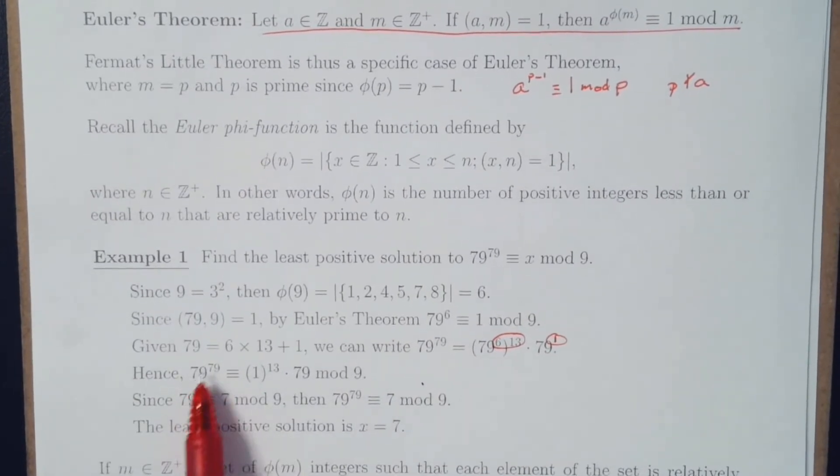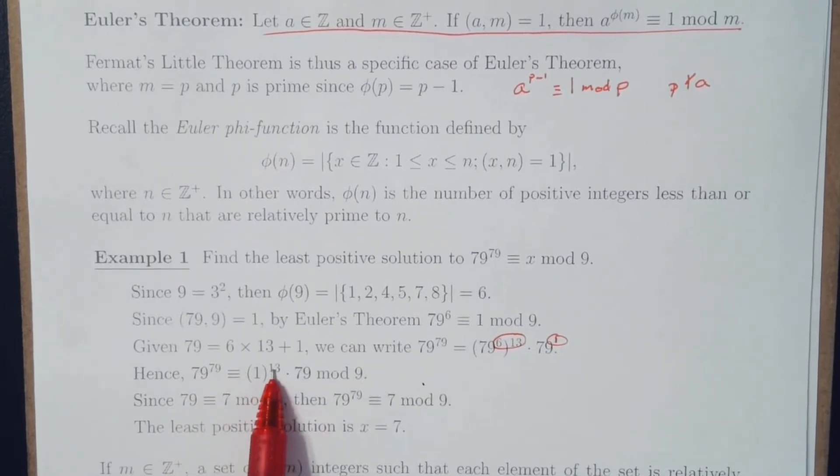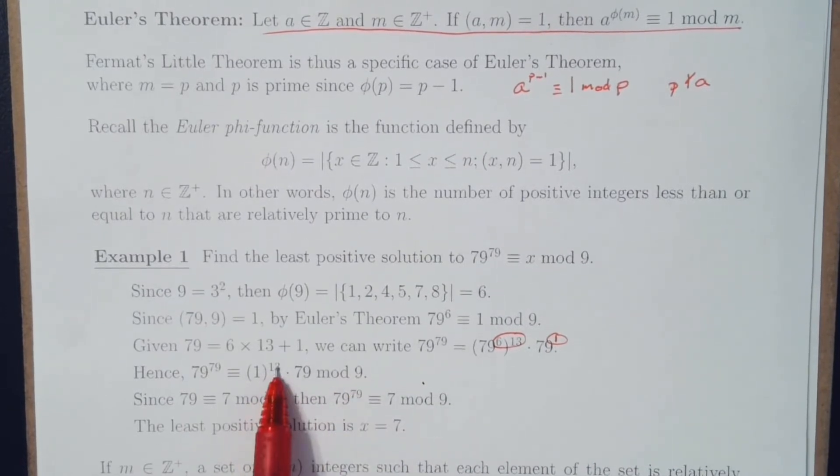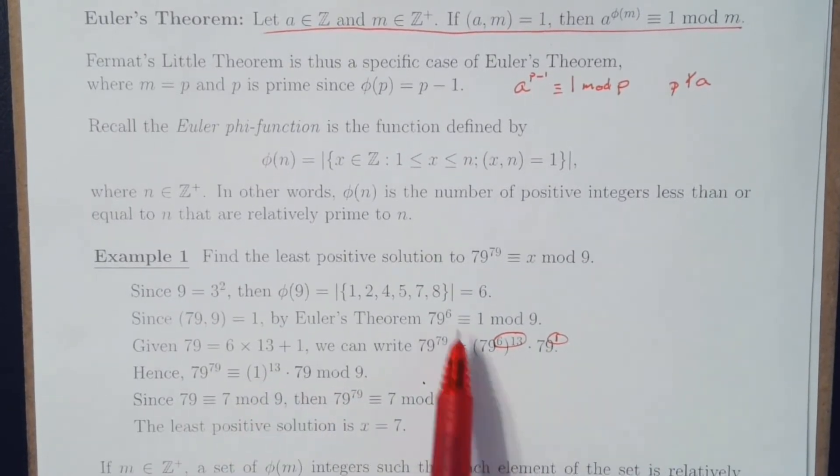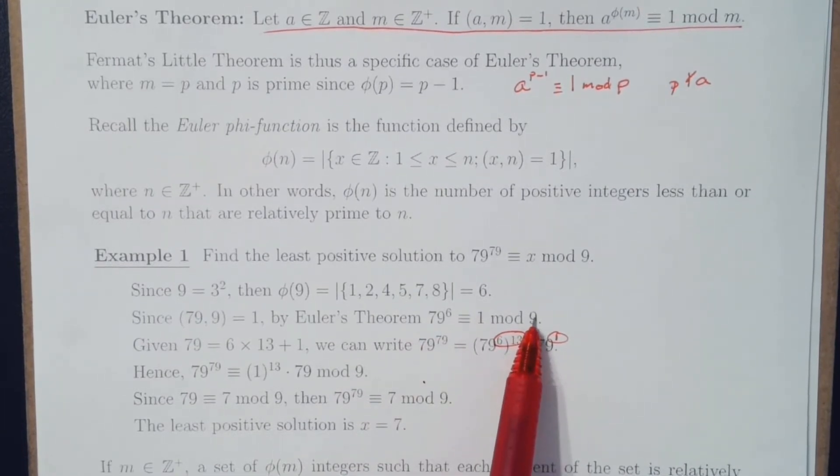Hence, 79 raised to the 79th power is equivalent to 1 to the 13th times 79 mod 9. Why 1 to the 13th? Well, that's because 79 to the 6th is equivalent to 1 mod 9.